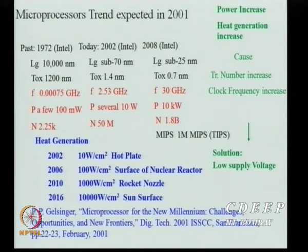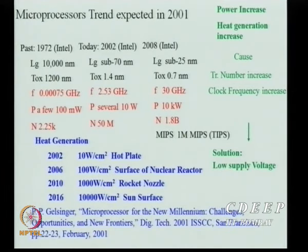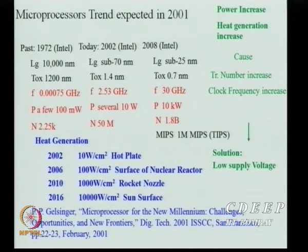In 2001, using older technology, power density was about 10 W/cm² — like a hot plate. By ~2005, it became 100 W/cm² — like the surface of a nuclear reactor. By 2010, this increased to 1000 W/cm². These thermal limits are major constraints even when simulations look excellent.